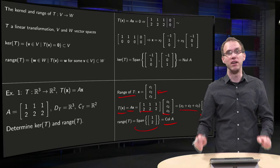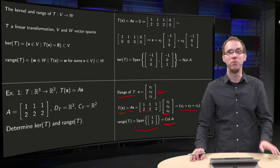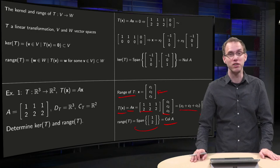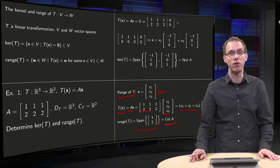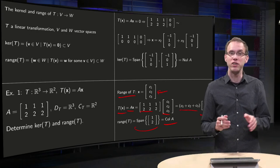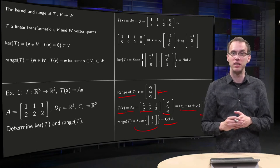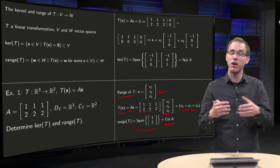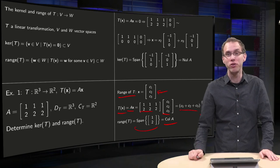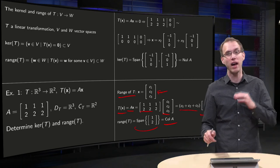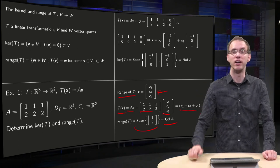So if you have a linear transformation given by some matrix A, you can also easily determine the range of the transformation, that is the same as the column space. So actually determining a kernel and range for a matrix transformation is easy because we encounter some old well-known subspaces: the null space of A for the kernel, and the column space of A for the range of the transformation.